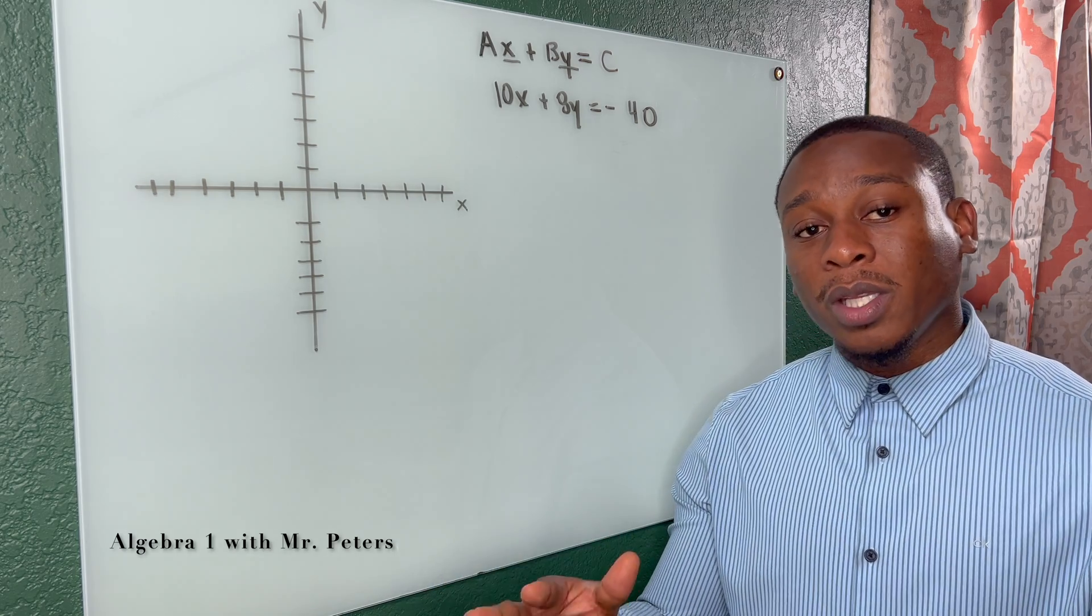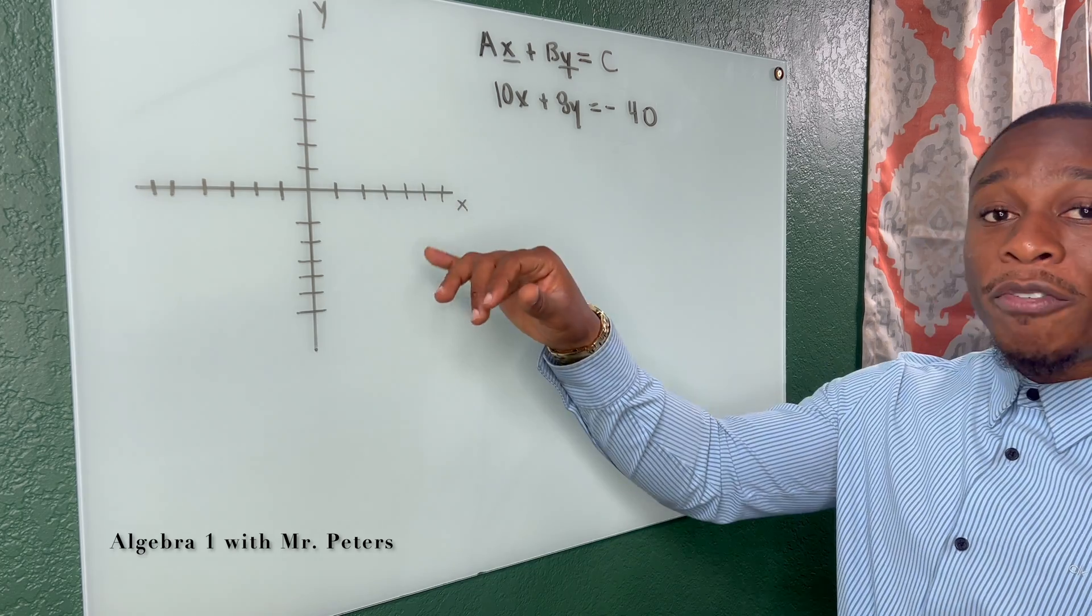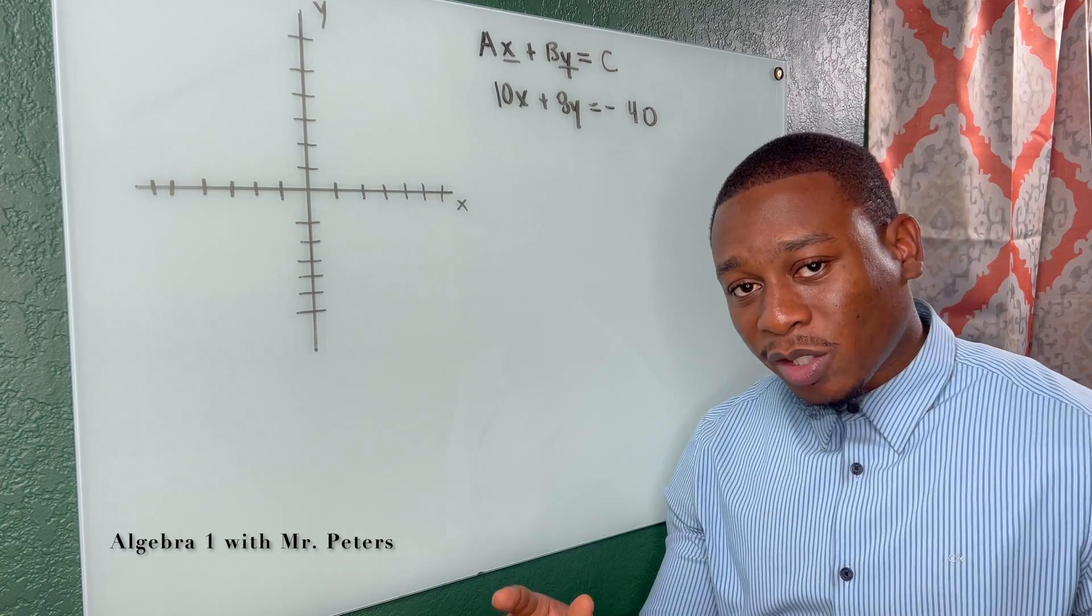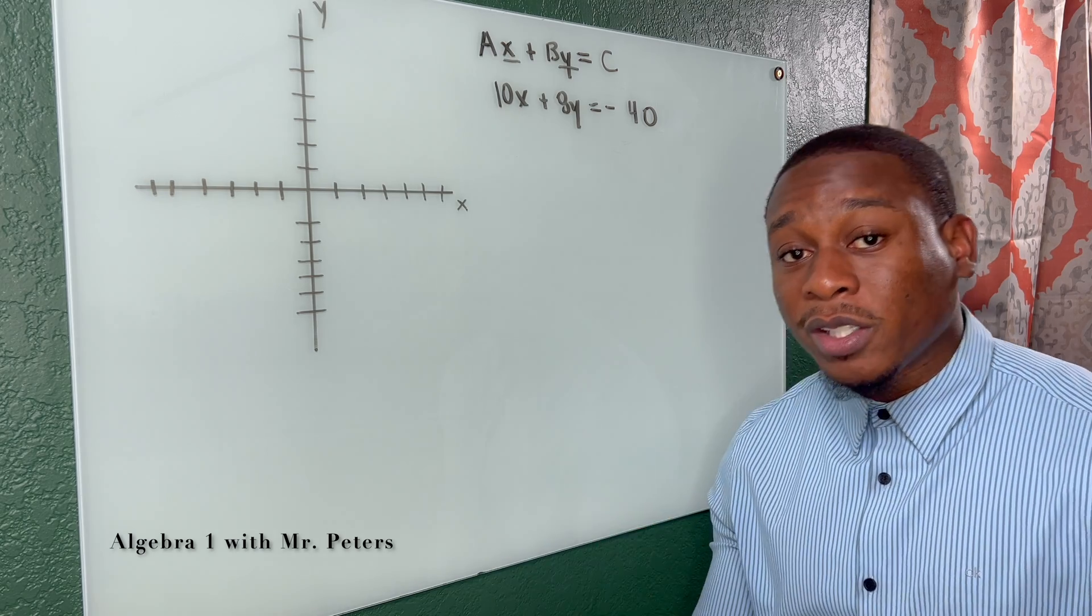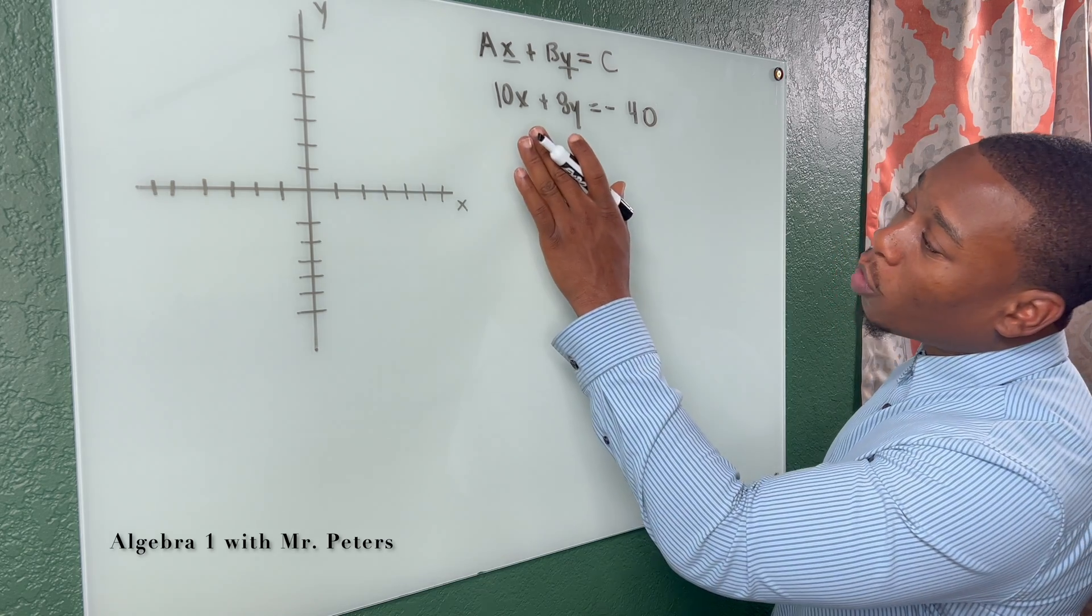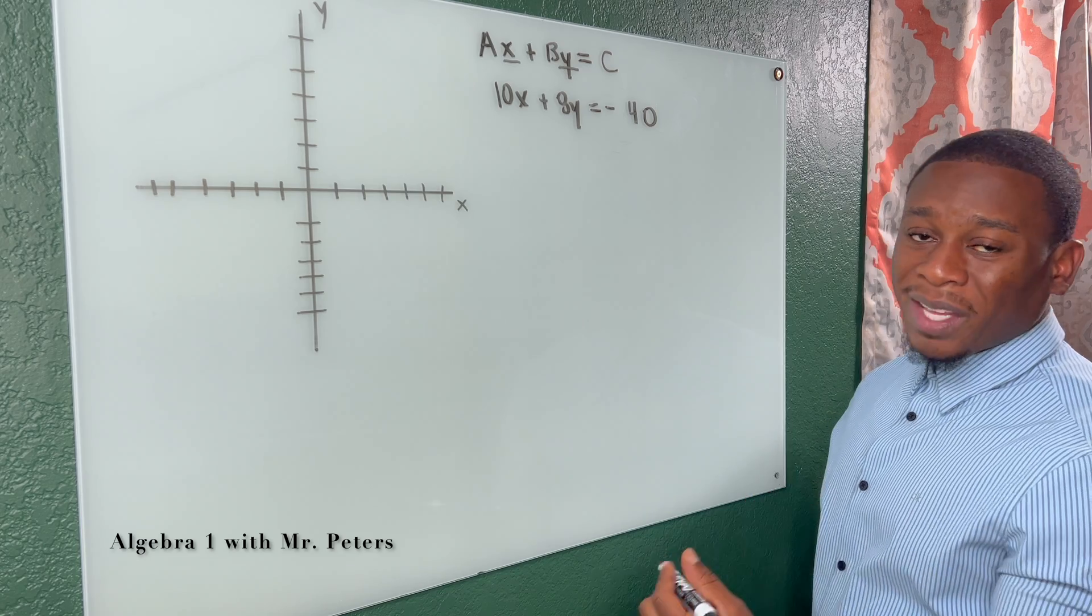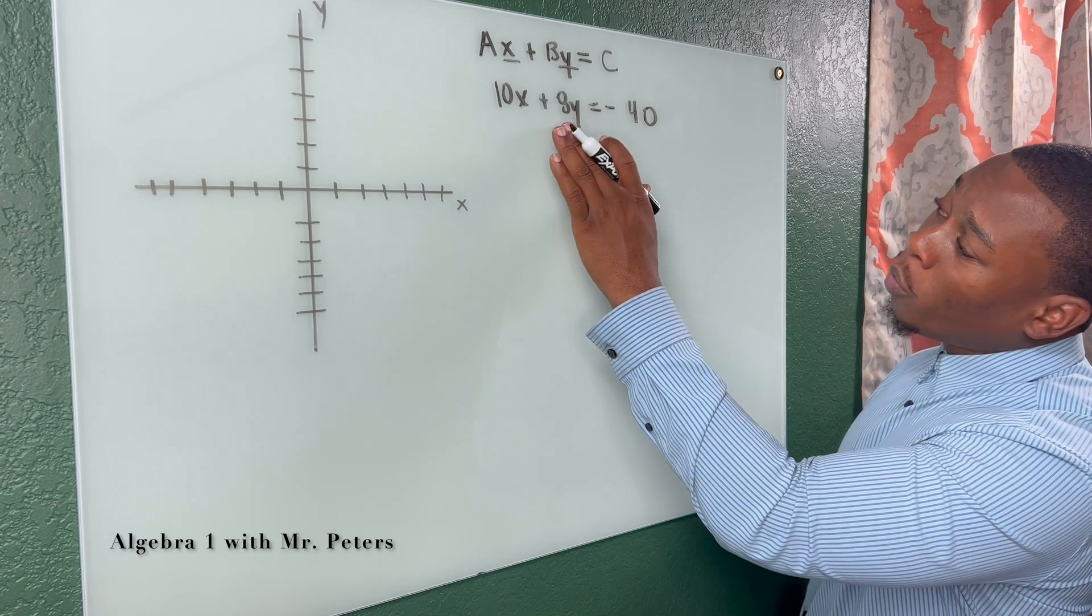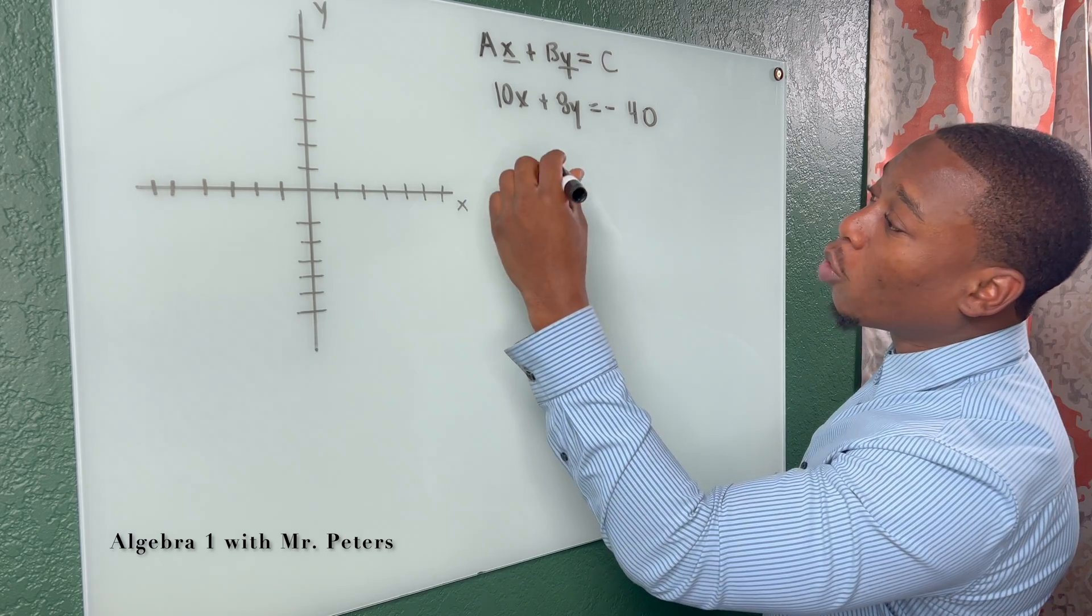So when we're dealing with this topic, it's going to be dealing with graphing lines. And the most common method is for us to graph by intercepts. So what does that mean? That means we're going to make one of the variables zero and we're going to solve for the other. So if we wanted to find out where on the X axis this line touches, we would make Y zero.